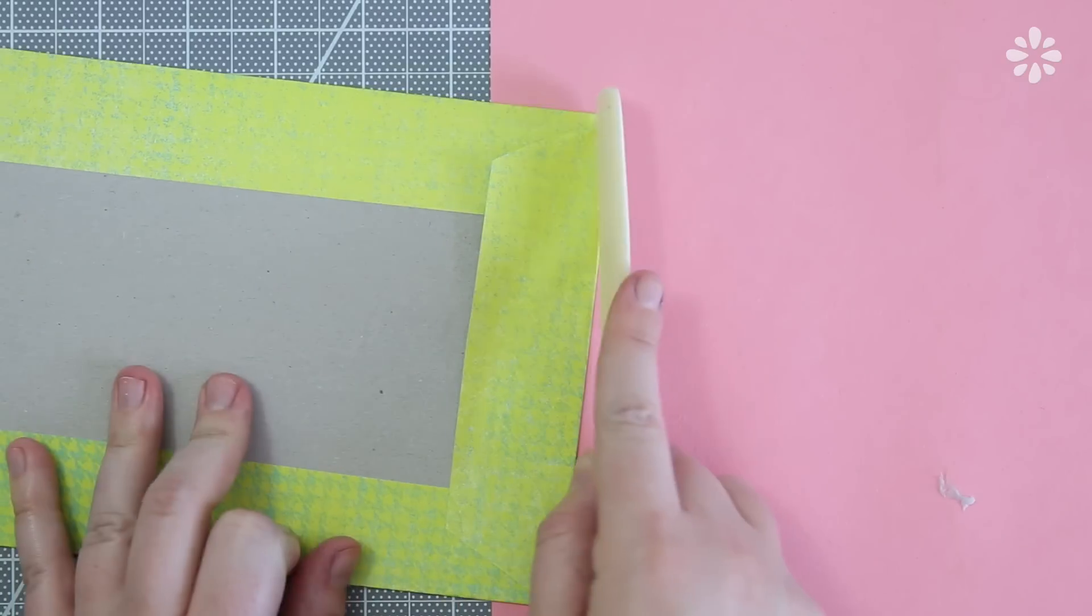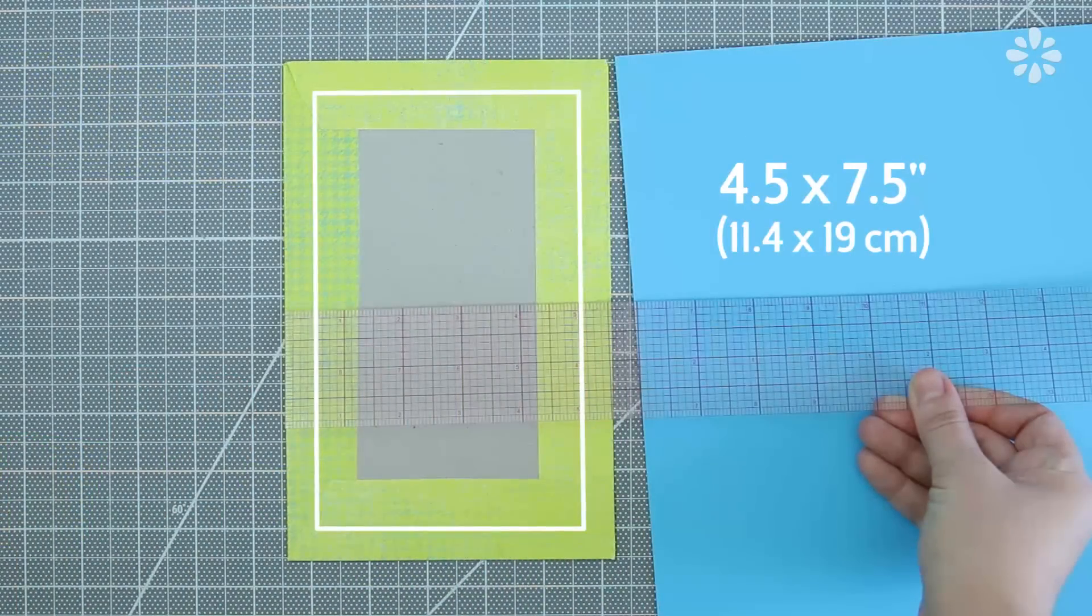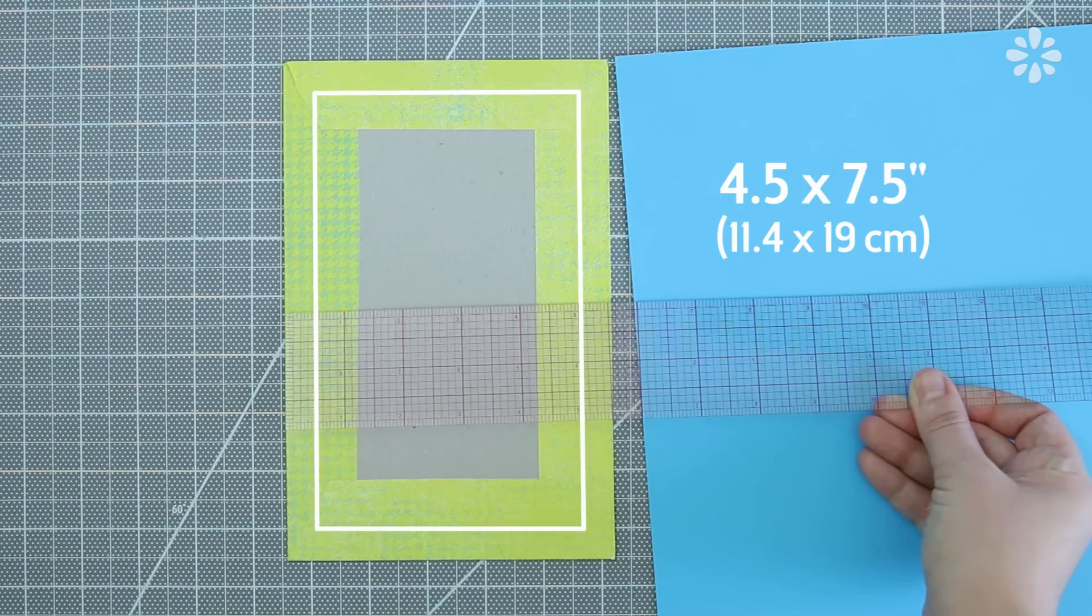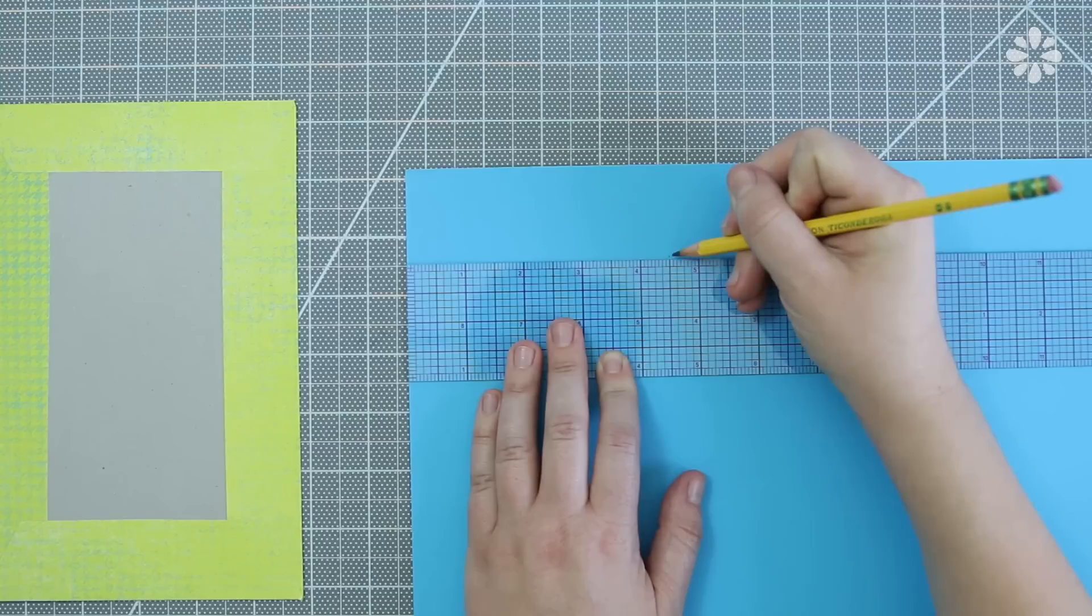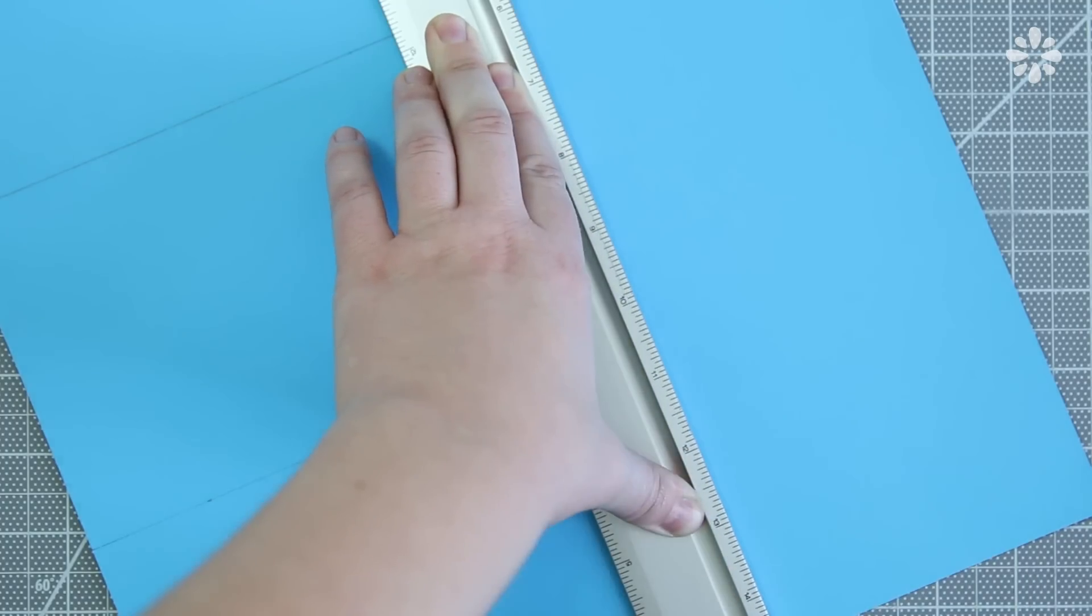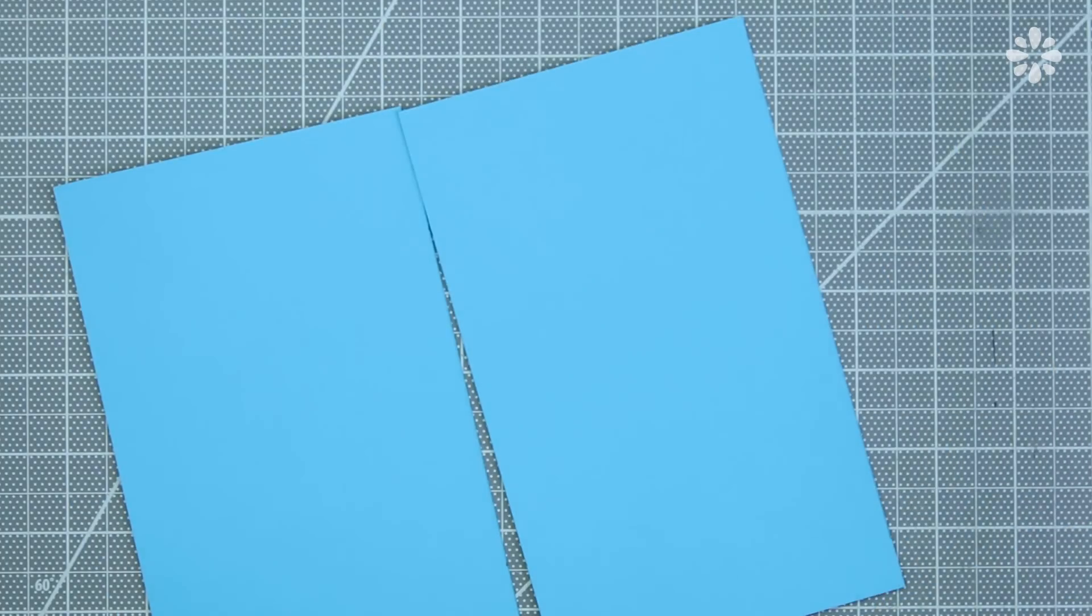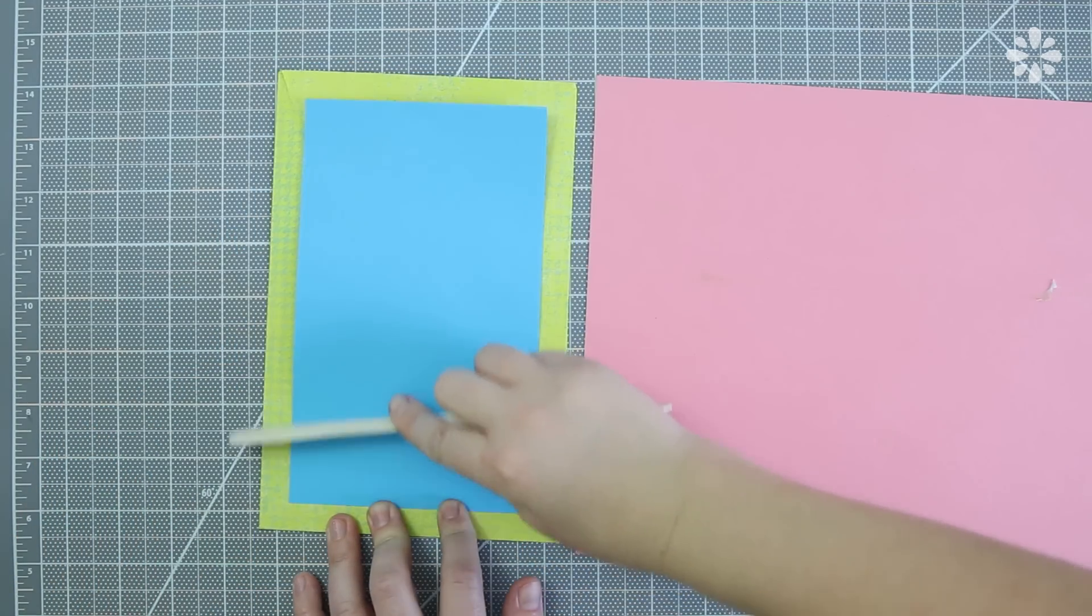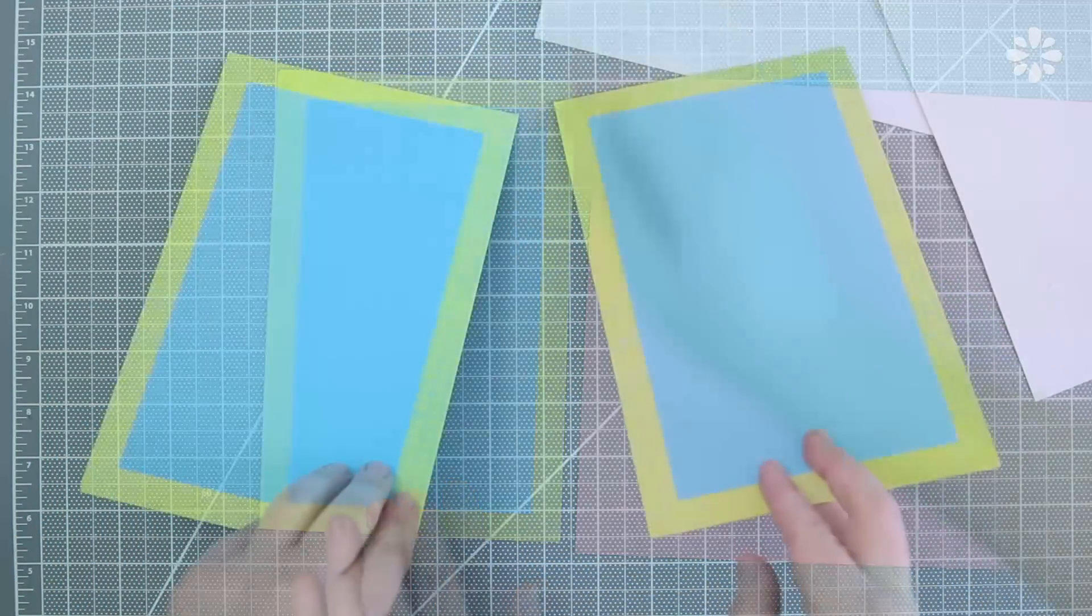After all the flaps are glued, then I'm going to cover the inside. To determine the size of the paper, I'm going to take an inch off of each side of the cover board. Mark those measurements twice on your paper so that you have one for each cover, and then cut them out. Then glue that piece centered on the inside of your cover. Repeat all those steps on your other board so that you have two covers.